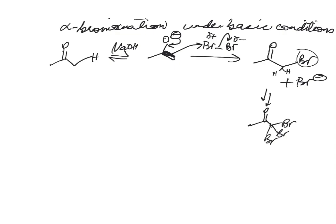The alpha-halogenated ketone is generally considered more reactive than the starting unsubstituted ketone. Because of the bromine group just added, the two remaining hydrogens are going to be even more susceptible for removal, so that reaction will occur faster and very quickly give you the tri-bromo product. That's the reason it's not typically used in the lab.